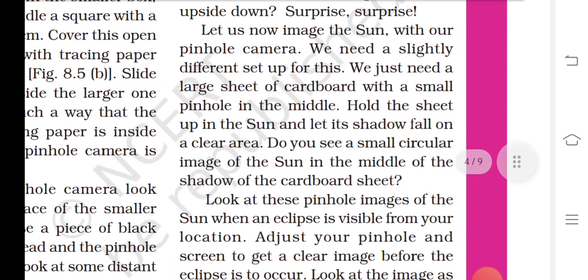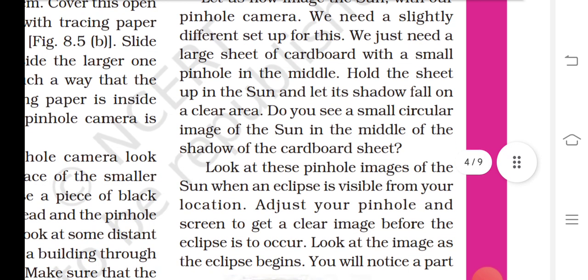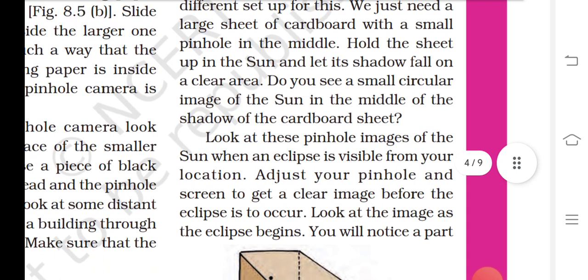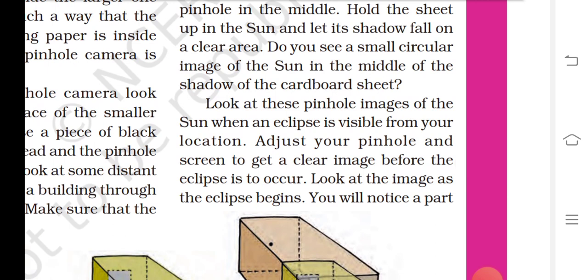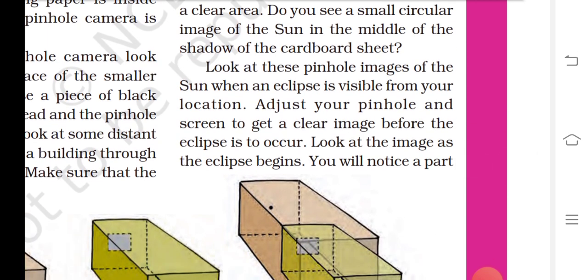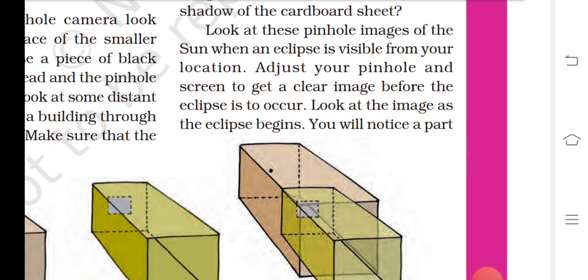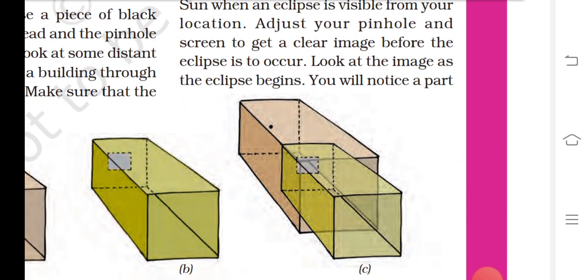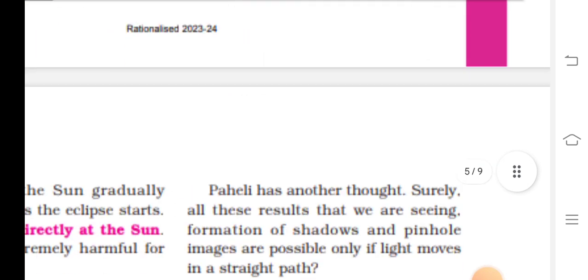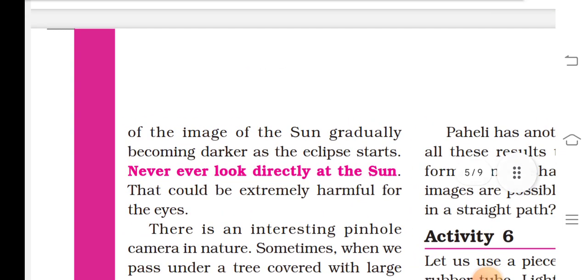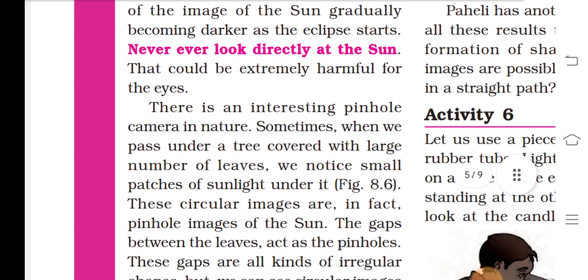Let us now image the sun with our pinhole camera. We need a slightly different setup for this. We just need a large sheet of cardboard with a small pinhole in the middle. Hold this sheet up in the sun and let its shadow fall on a clear area. Do you see a small circular image of the sun in the middle of the shadow of the cardboard sheet? Look at this pinhole image of the sun when an eclipse is visible from your location. Adjust your pinhole and screen to get a clear image before the eclipse is to occur. Look at the image as the eclipse begins. You will notice a part of the image of the sun gradually becoming darker as the eclipse starts.